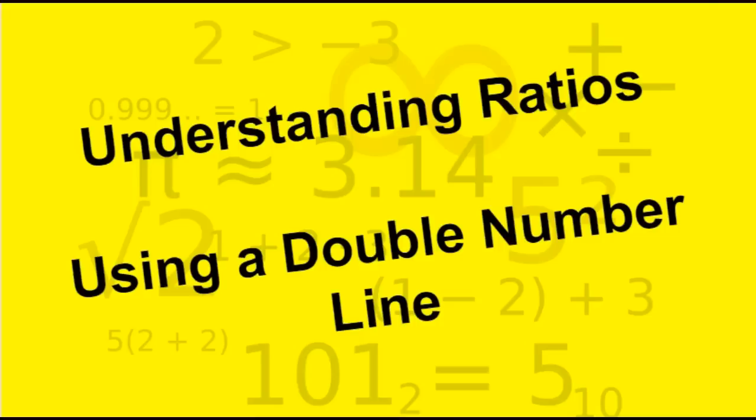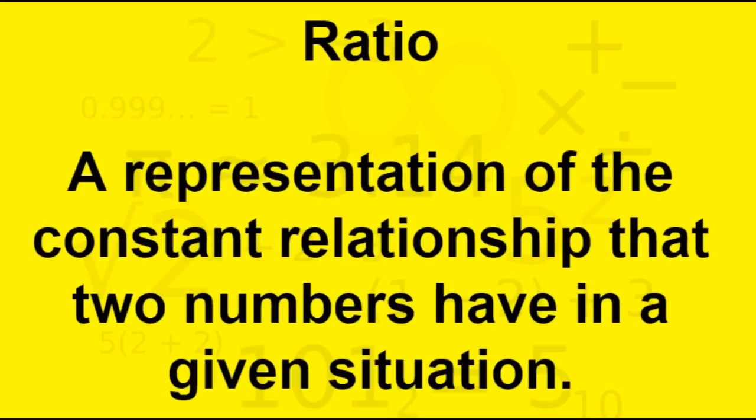Hello, and today we are going to look at understanding ratios using a double number line. Let's look at a quick definition of what a ratio is. A ratio is a representation of the constant relationship that two numbers have in a given situation.